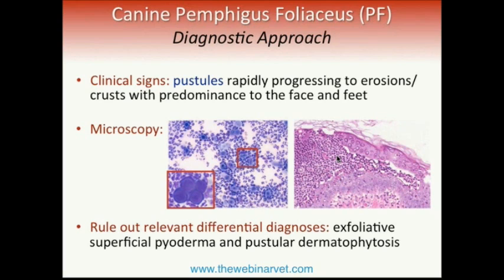Always rule out other acantholytic dermatoses. The most common one is exfoliative superficial pyoderma, and a less common condition is pustular dermatophytosis. These two diseases, if you take a biopsy and send it to a pathologist, will look identical to Pemphigus foliaceus. Once your pathologist confirms subcorneal pustular dermatosis with acantholytic cells, it is up to you to go back to the clinical picture and make your judgment.